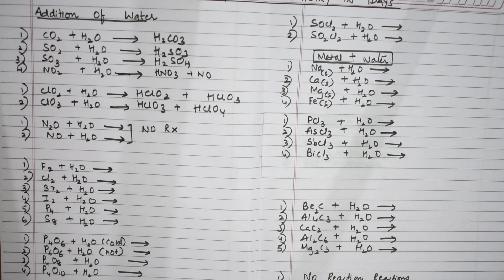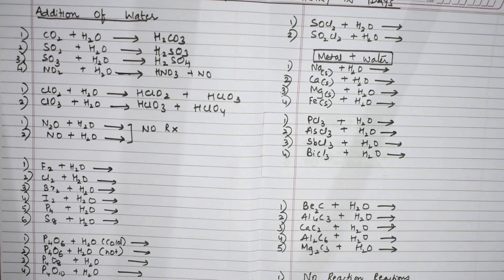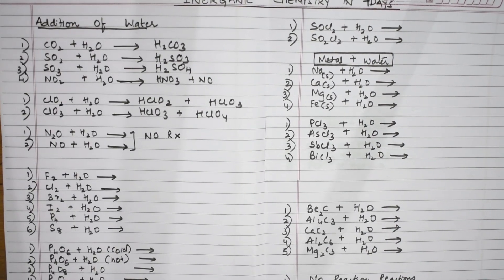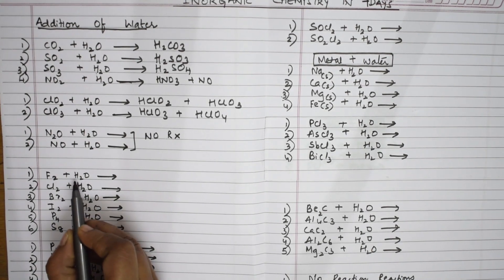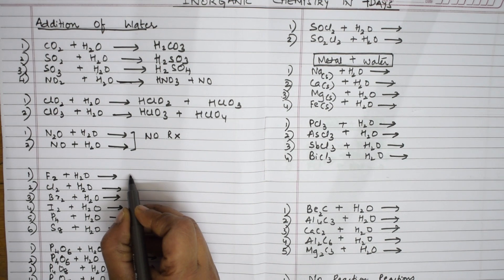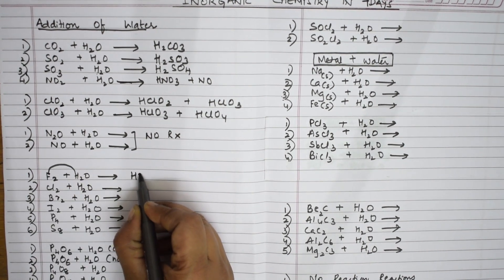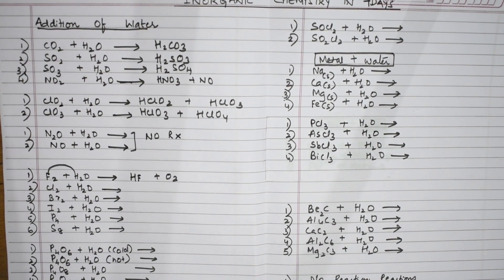Next, halogens plus water: fluorine, chlorine, bromine, iodine, and also P4 and S8. When fluorine combines with water, taking the two hydrogens, you get HF and O2. This nascent oxygen is called ozonite oxygen.